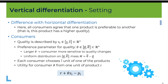Vertical differentiation is different in the sense that all consumers agree that one product is preferable to another. Think of one product having a higher quality than the other product. In that case, if the two products are sold at the same price, there will be no demand for the low quality product and all consumers will buy the high quality product.